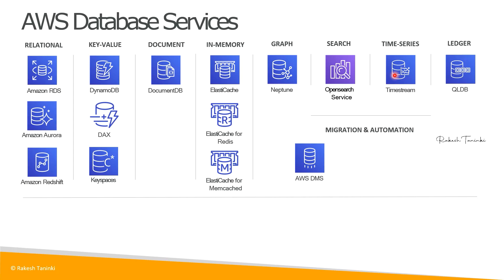Next is the Ledger database category — Amazon QLDB, the Quantum Ledger Database. This is related to blockchain technology. AWS enables ledger services through QLDB. When you need to migrate databases, there is the Database Migration Service, which supports migrating MySQL, PostgreSQL, Aurora, Redshift, and other databases.